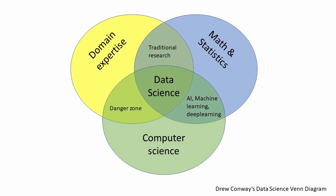Data science is an interdisciplinary field that uses scientific methods, processes, and algorithms to extract knowledge and insights from data. It's a combination of three main things: domain expertise, computer science, and math and statistics. The intersection of all three is data science. The intersection of math/statistics and computer science is AI, machine learning, and deep learning. The intersection of domain expertise and math/statistics is traditional research. The intersection of domain expertise and computer science is called the 'danger zone' — a term from Drew Conway's Venn diagram.